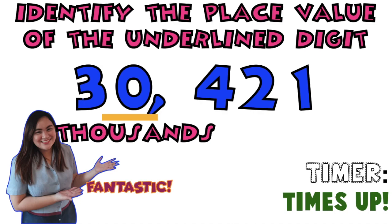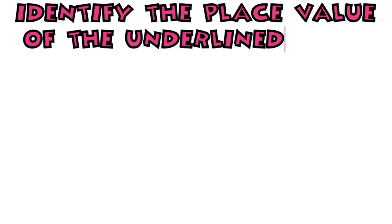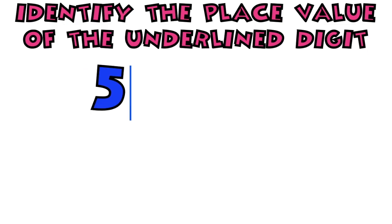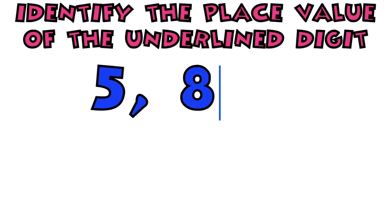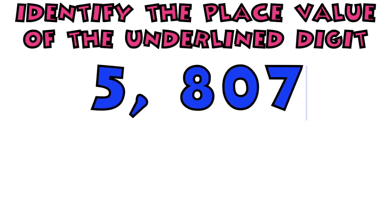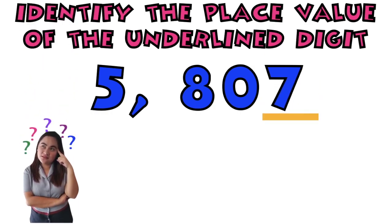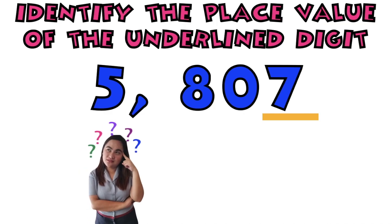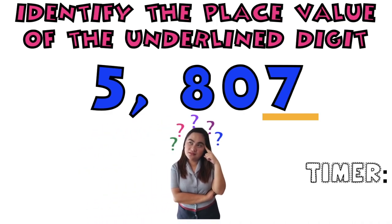Let's have our last number. I have here 5,807. What is the place value of digit 7? Timer starts now. That is the easiest.